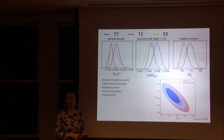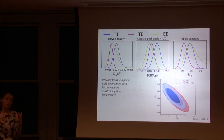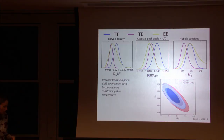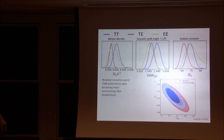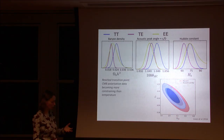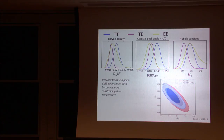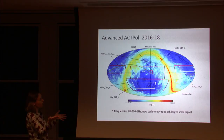Parameters affecting the damping tail of the CMB — including the number of neutrino species and the helium fraction — get squeezed by adding this new polarization data. The number of neutrino species is interesting because we don't know if it's three; there could be additional relativistic species produced in the early universe that decoupled before neutrinos. We're about to analyze our full data sets and check whether what we've seen from Planck is right.